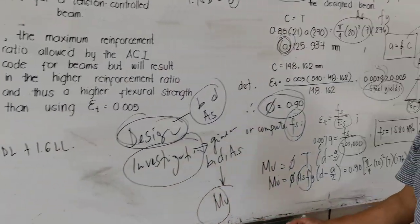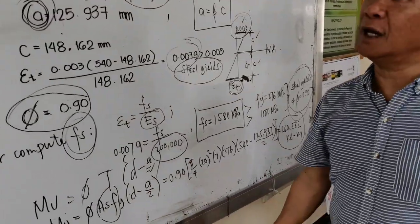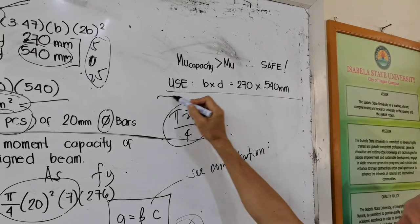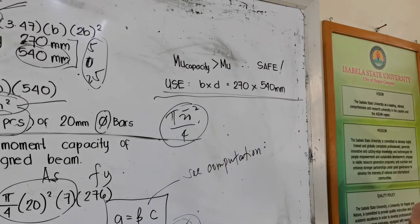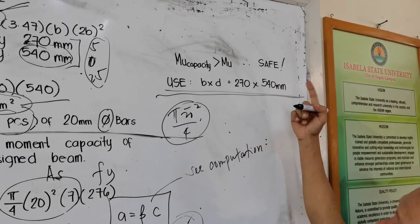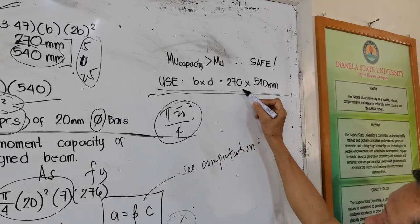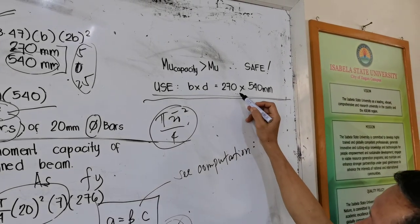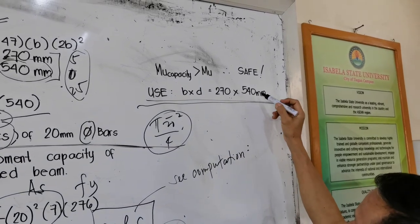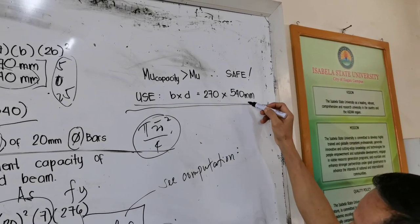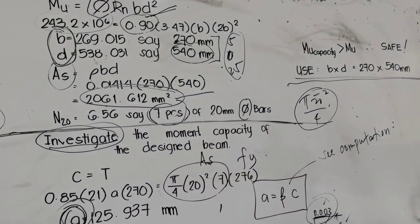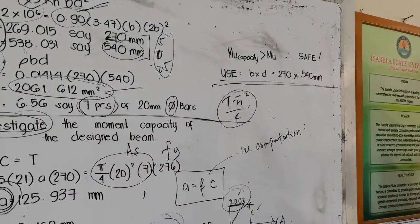That's the end of the investigation of the singly reinforced beam. We can now conclude that a beam with 270 mm base, effective depth of 540 mm, and 7 pieces of 20 mm diameter bars is adequate.